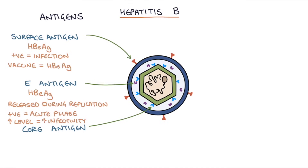Finally, we need to talk about the hepatitis B core antigen. This is found on the inside — the core area — of the hepatitis B virus. This antigen does not circulate in the blood, so it's not a helpful test on a blood test because it will be negative either way. However, it becomes relevant when we talk about antibodies.